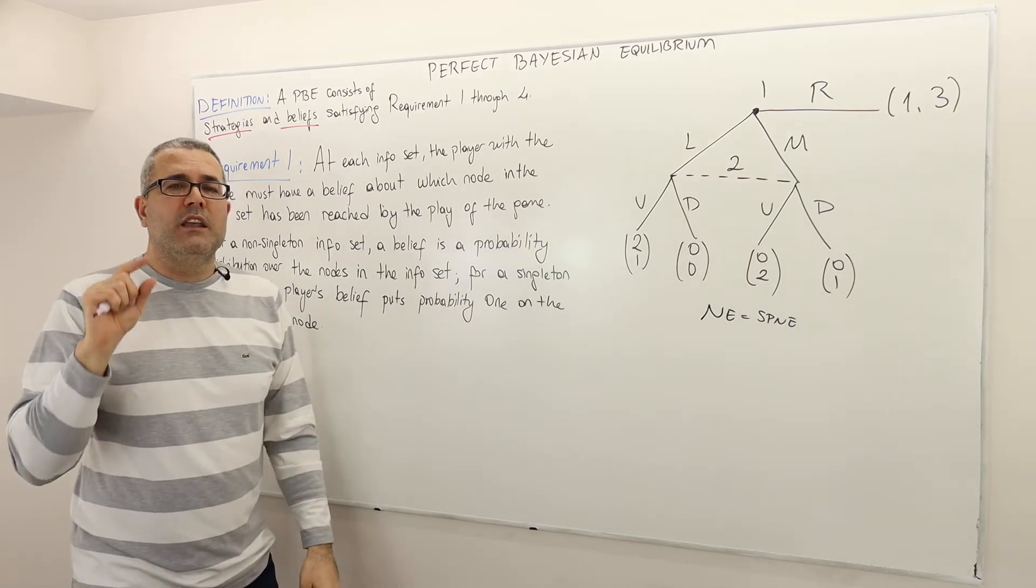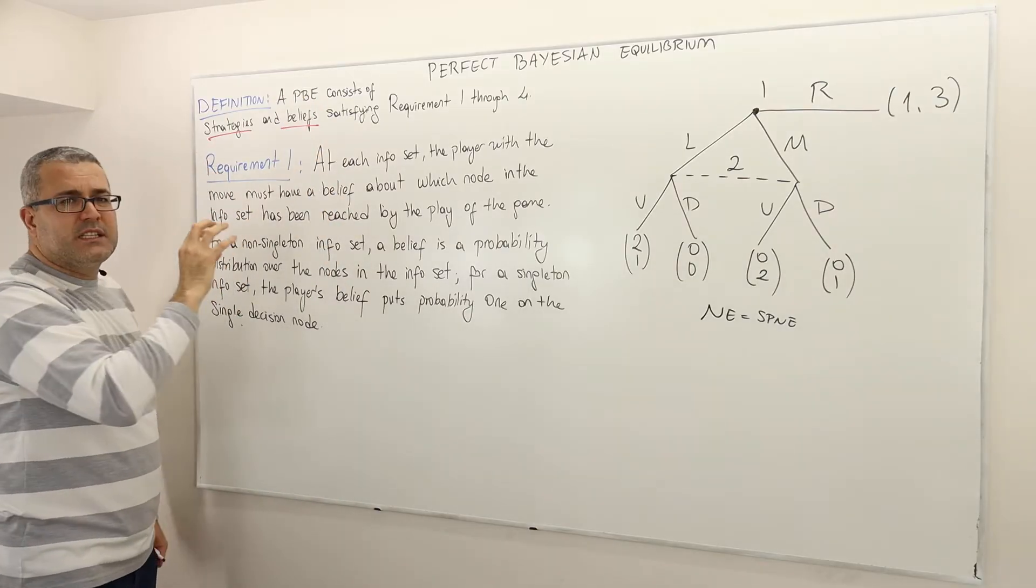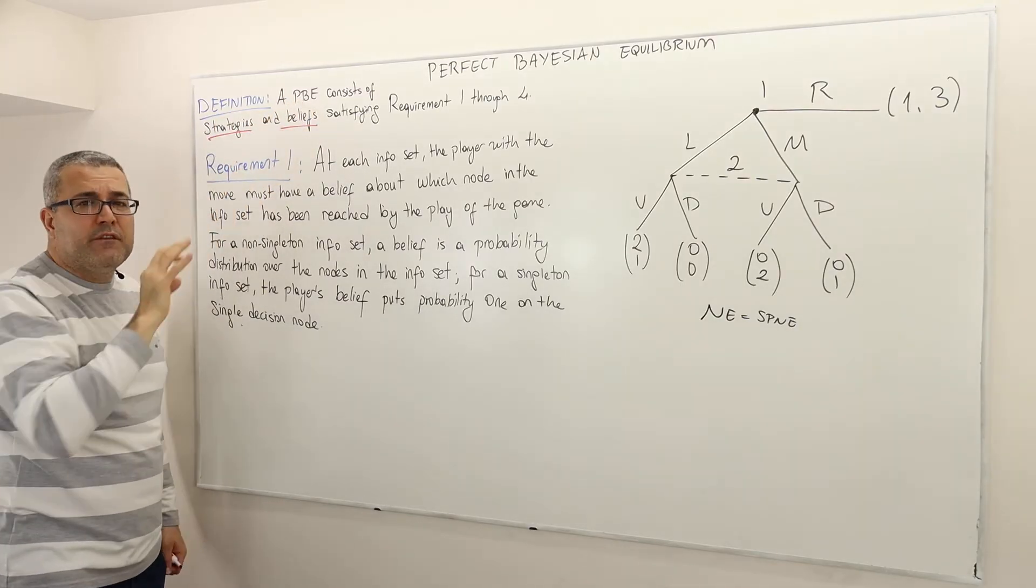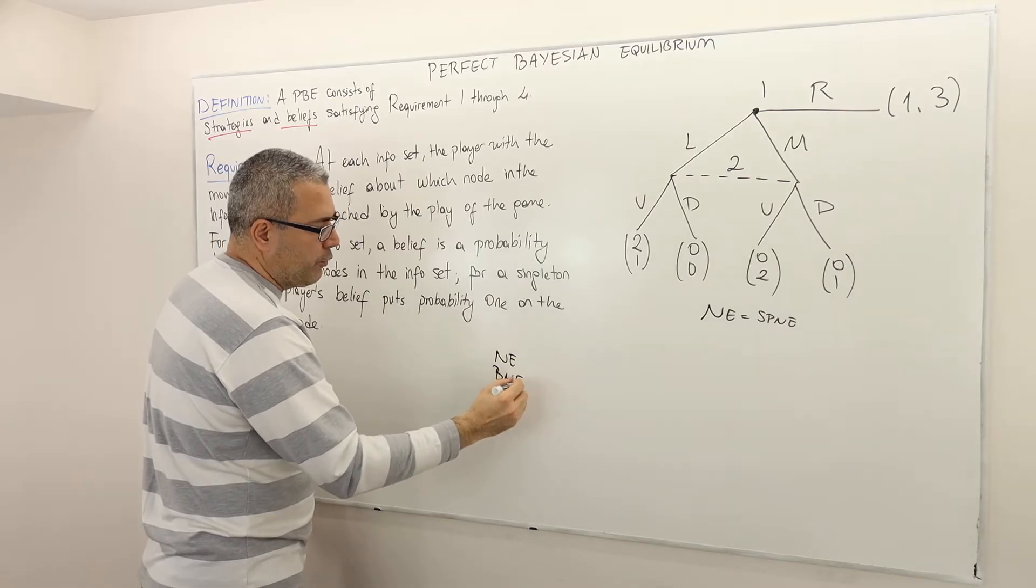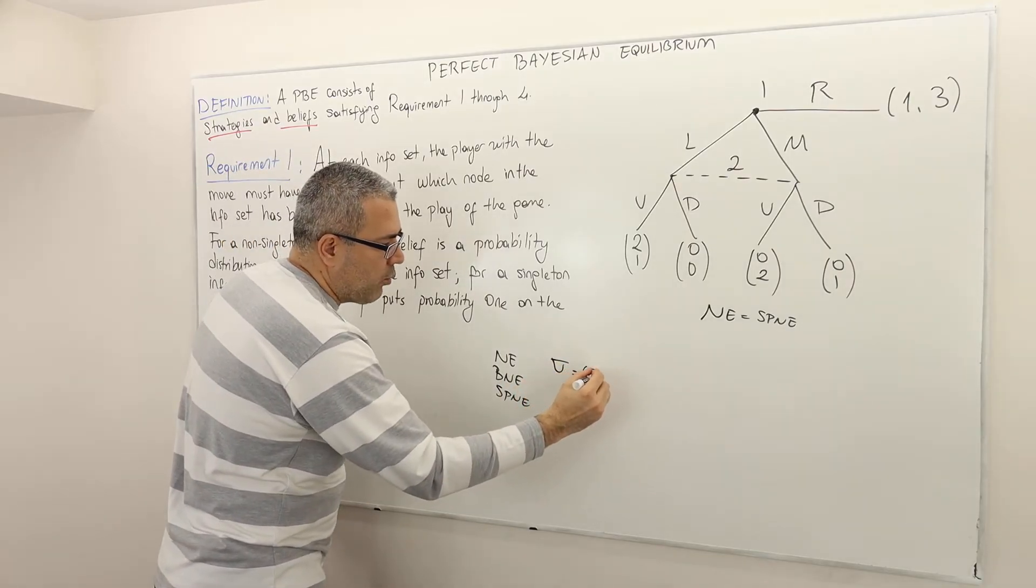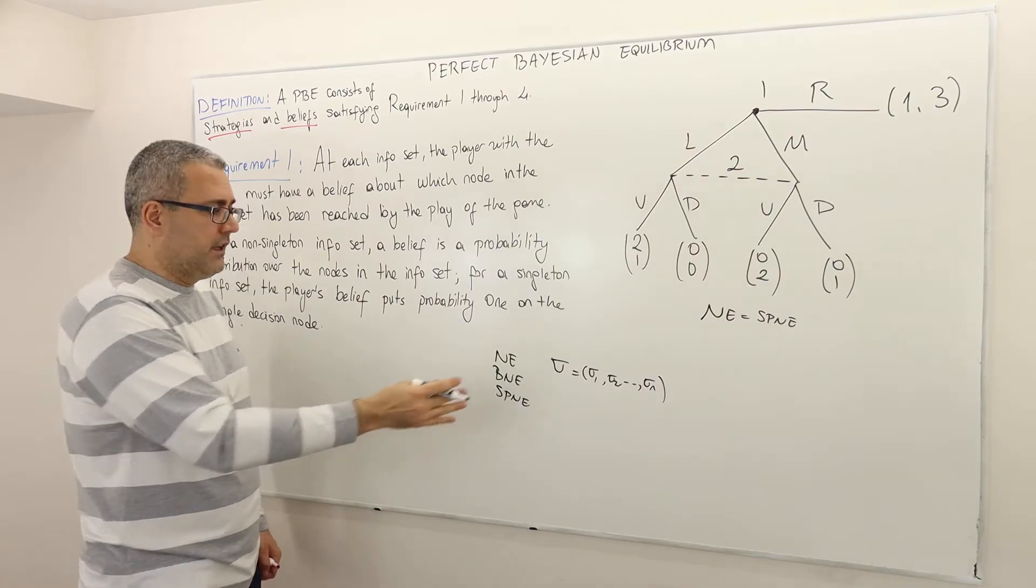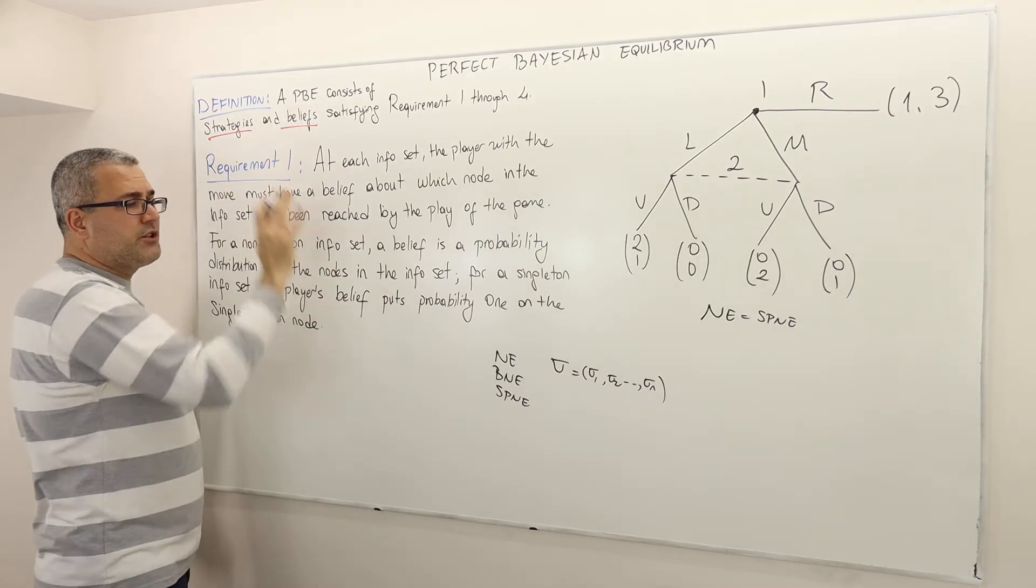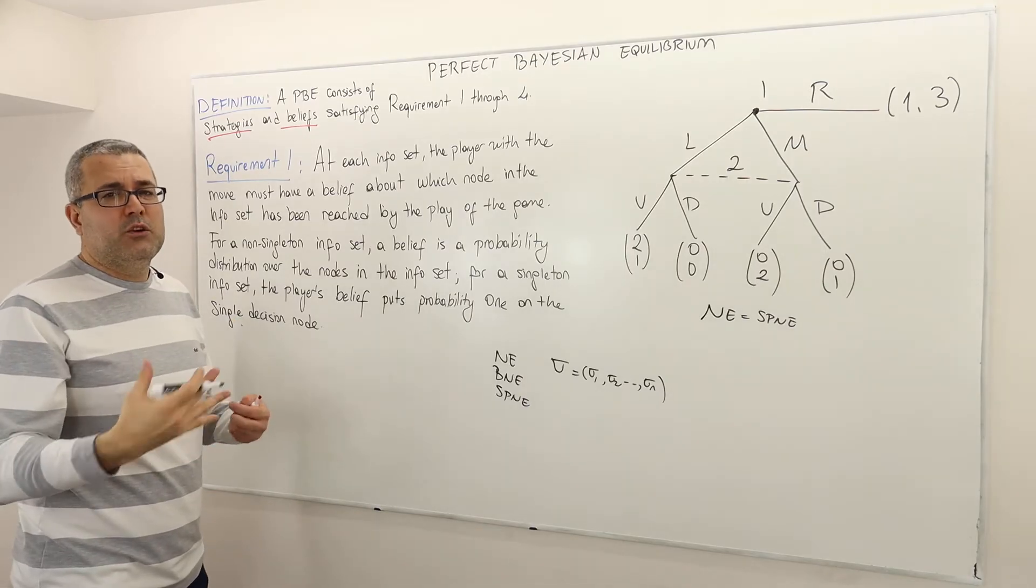Here in this definition you have to be clear about one thing. Equilibrium now consists of strategies and beliefs. The beliefs part were never part of equilibrium. If you remember whenever we talked about Nash equilibrium or Bayesian Nash equilibrium or subgame perfect Nash equilibrium, we only had a strategy profile: sigma which is sigma 1, sigma 2, sigma n. So strategy for each player. And that was it. The strategy profile was an equilibrium. But now we should have not only strategies but also beliefs. So we need a second component to define an equilibrium.